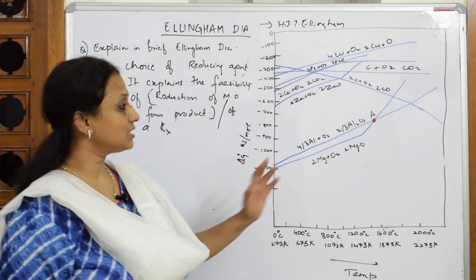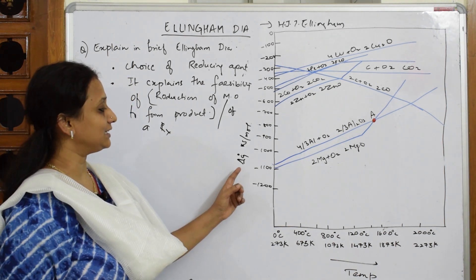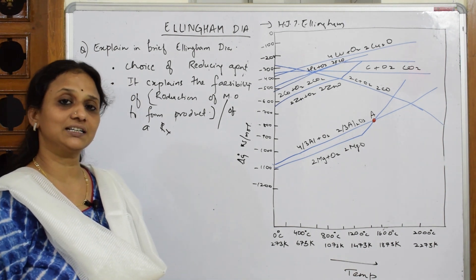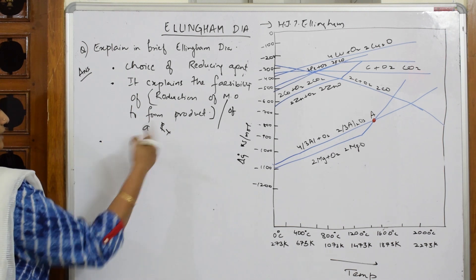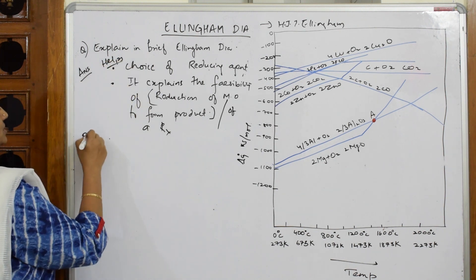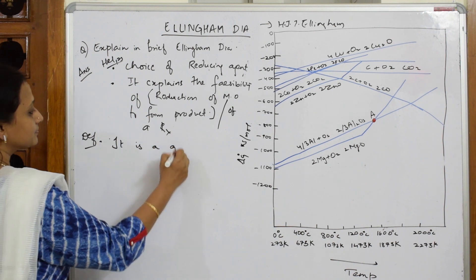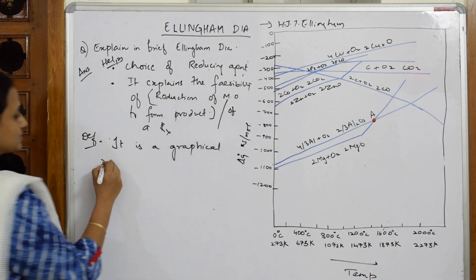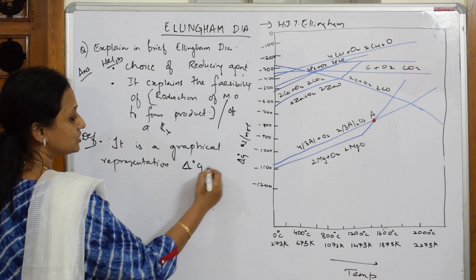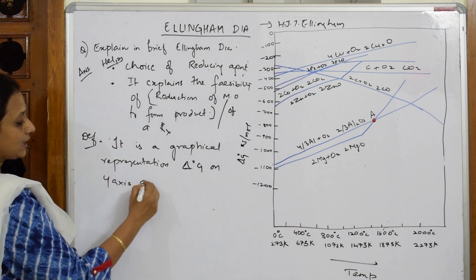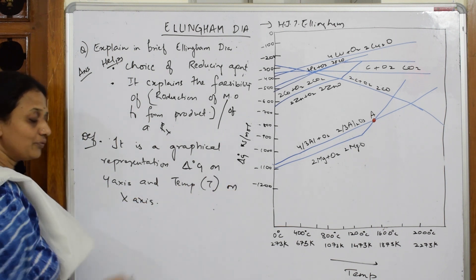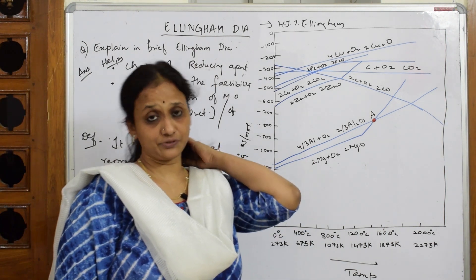Basically the Ellingham diagram is represented in the form of a graph. It takes two important factors: ΔG° on the y-axis and temperature (T) on the x-axis. So the definition is: it is a graphical representation of ΔG° on the y-axis and temperature (T) on the x-axis.